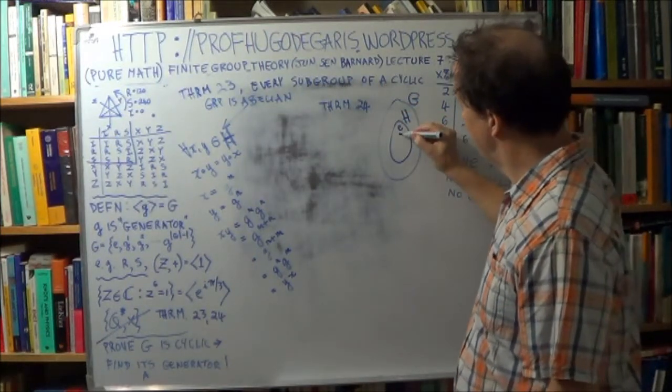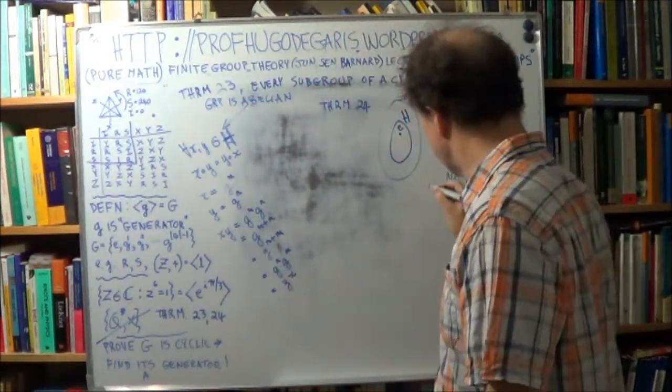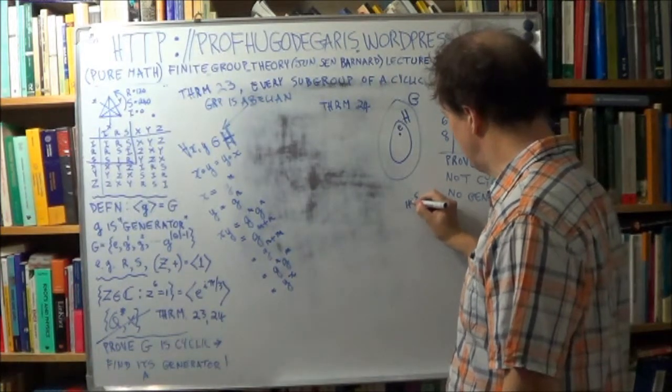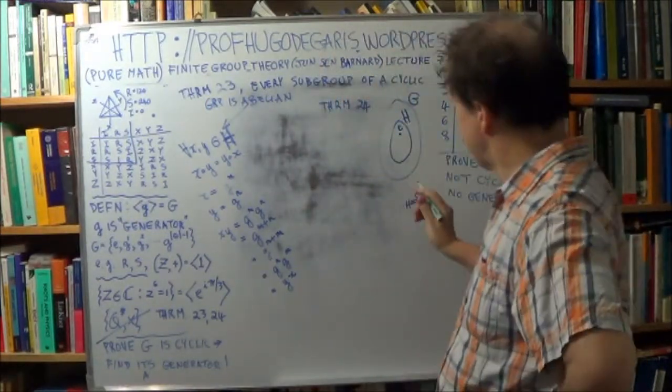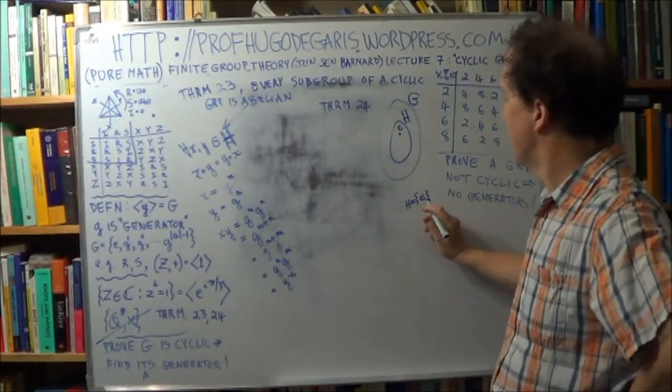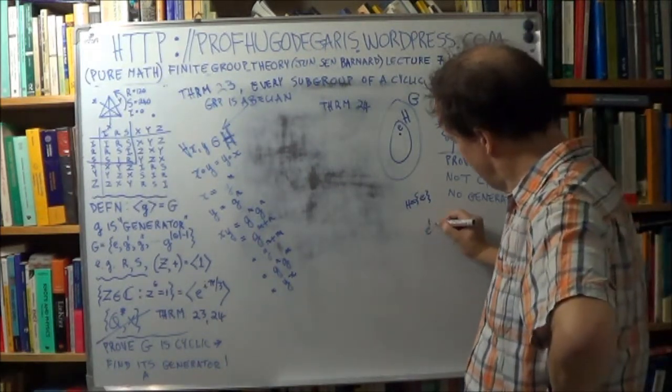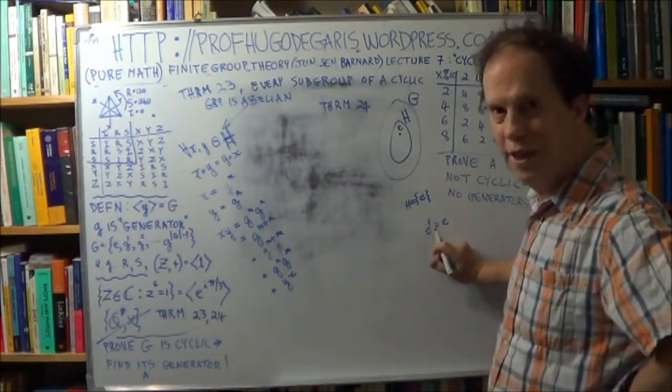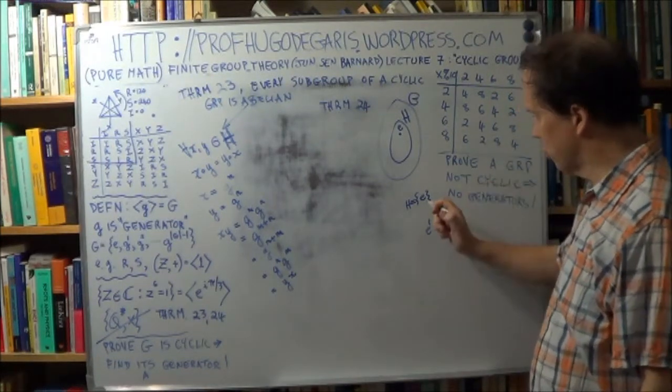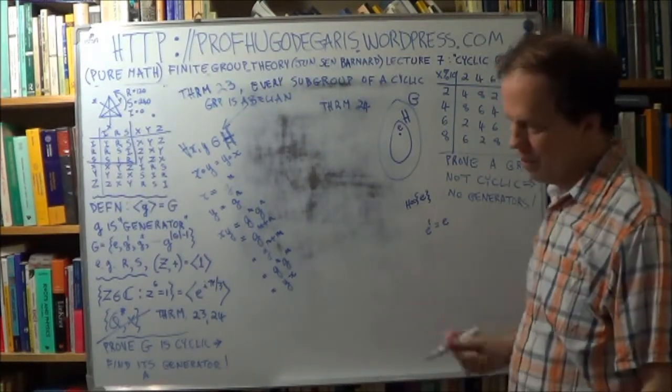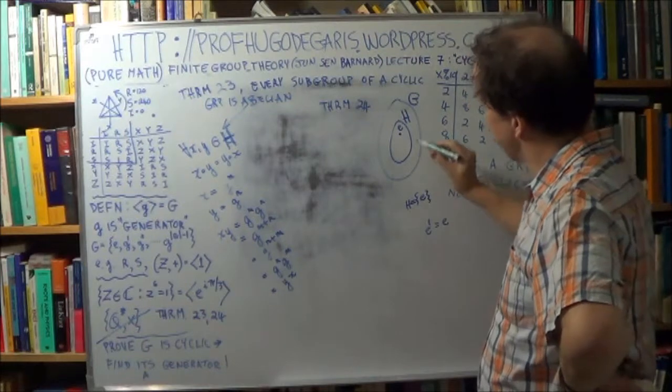Now, if your subgroup is the trivial subgroup, so if H is just the set of the unit, the so-called trivial subgroup, then that's cyclic. The whole group, there's only one element. So E^1 is equal to E. So the order of the element is one, okay? And the order of the group is also one. So there's this rare case where the two are the same. All right, so E is cyclic.